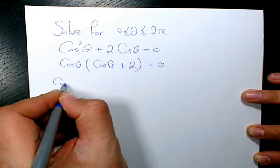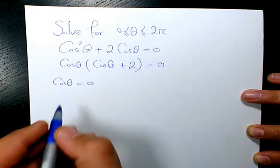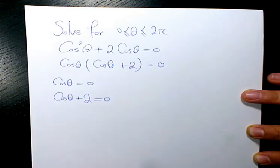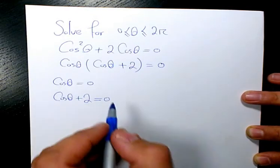It means that either cosθ = 0 or cosθ + 2 = 0.